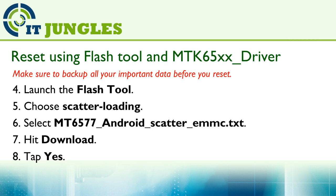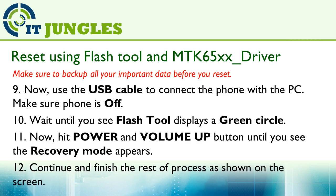Next, launch the flash tool. And then choose scatter loading. Then you want to select the MT6577 text file. After that, hit download and tap on yes. Next, use the USB cable to connect the phone to the PC, and make sure the phone is switched off.